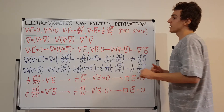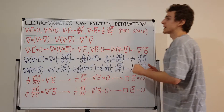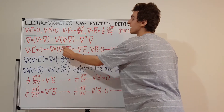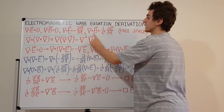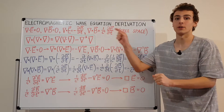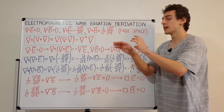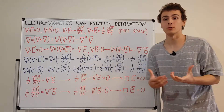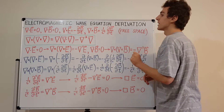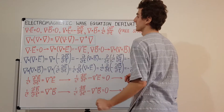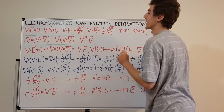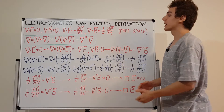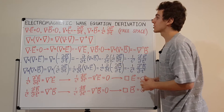Now what else do we need? We need this vector identity. The vector identity says that the curl of the curl of any vector field V is equal to the gradient of the divergence minus the Laplacian. The Laplacian — represented by the del operator, or nabla, with a little square on top — sums up all the second partial derivatives with respect to x, y, and z. The gradient of the divergence is the reverse of that. We're going to assume this vector identity is true and use it to derive the electromagnetic wave equation.